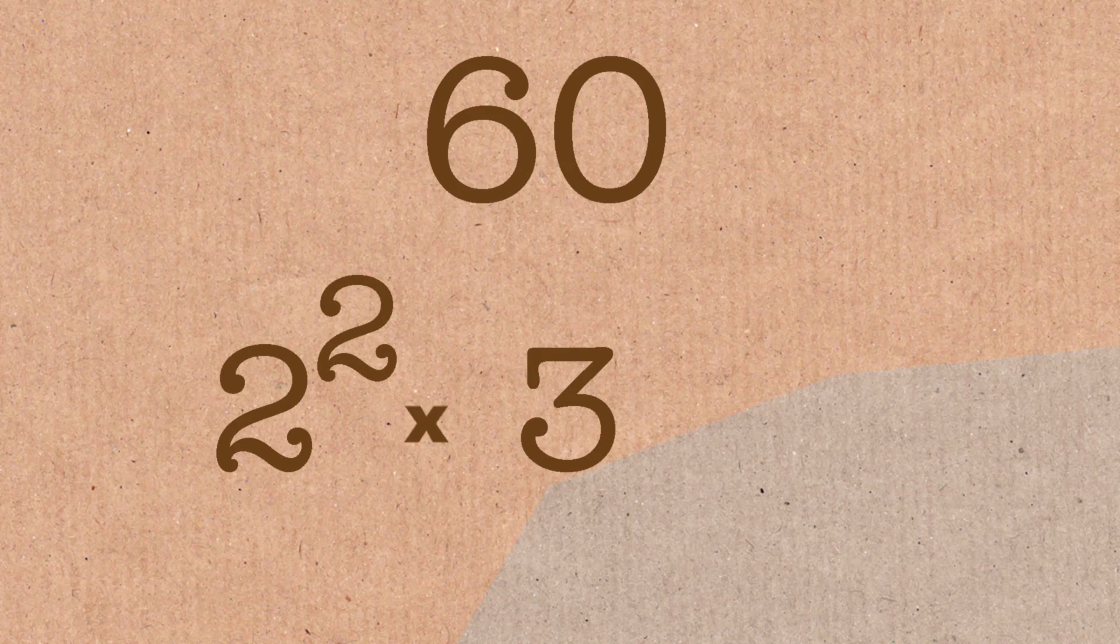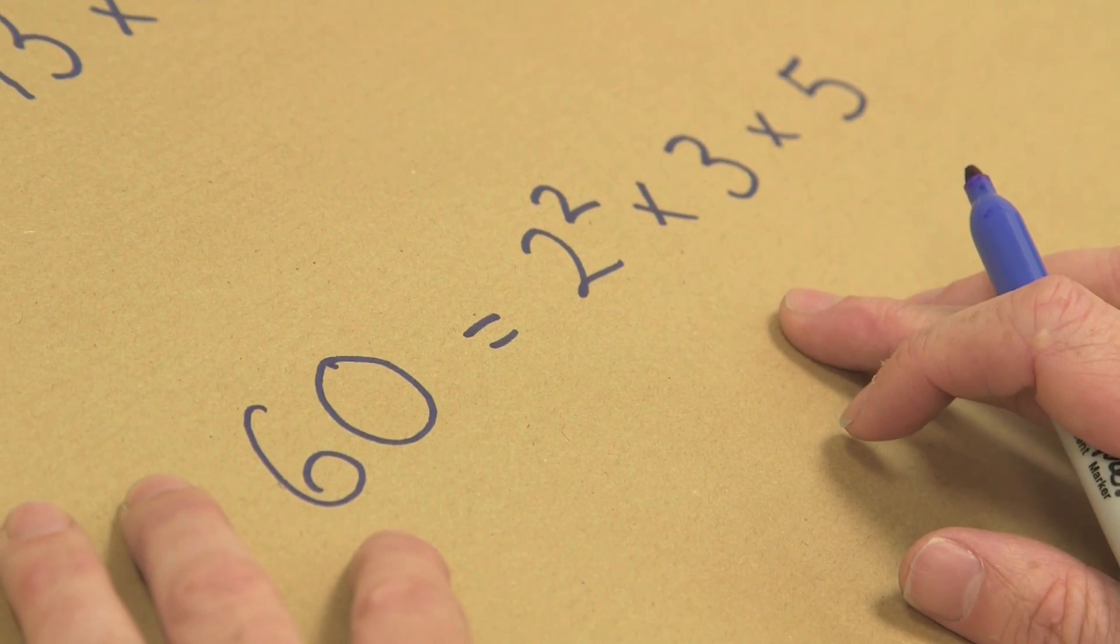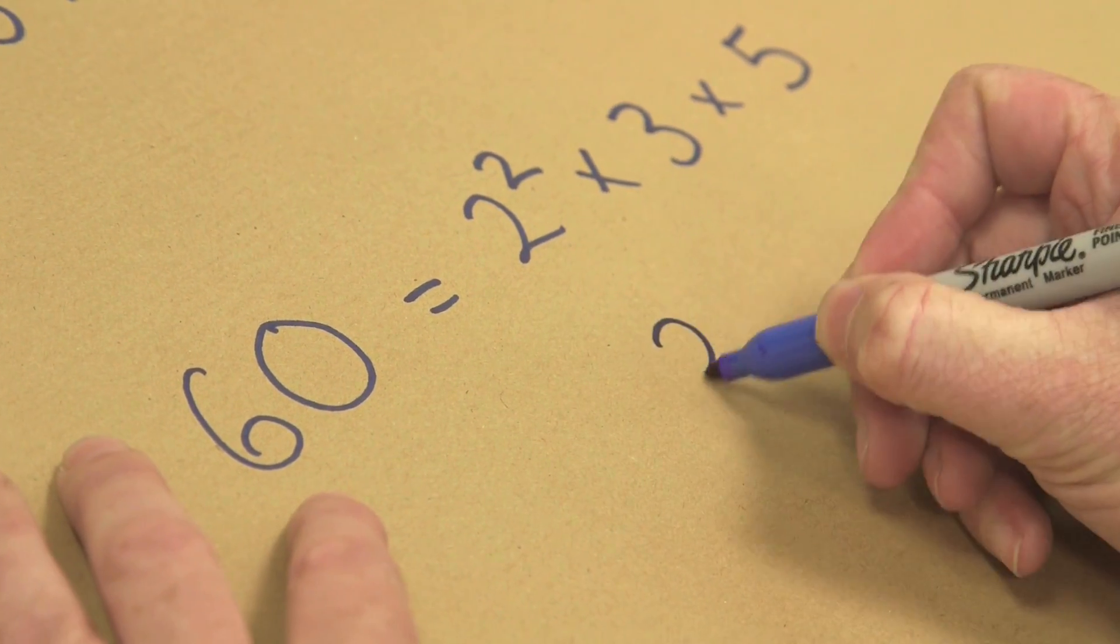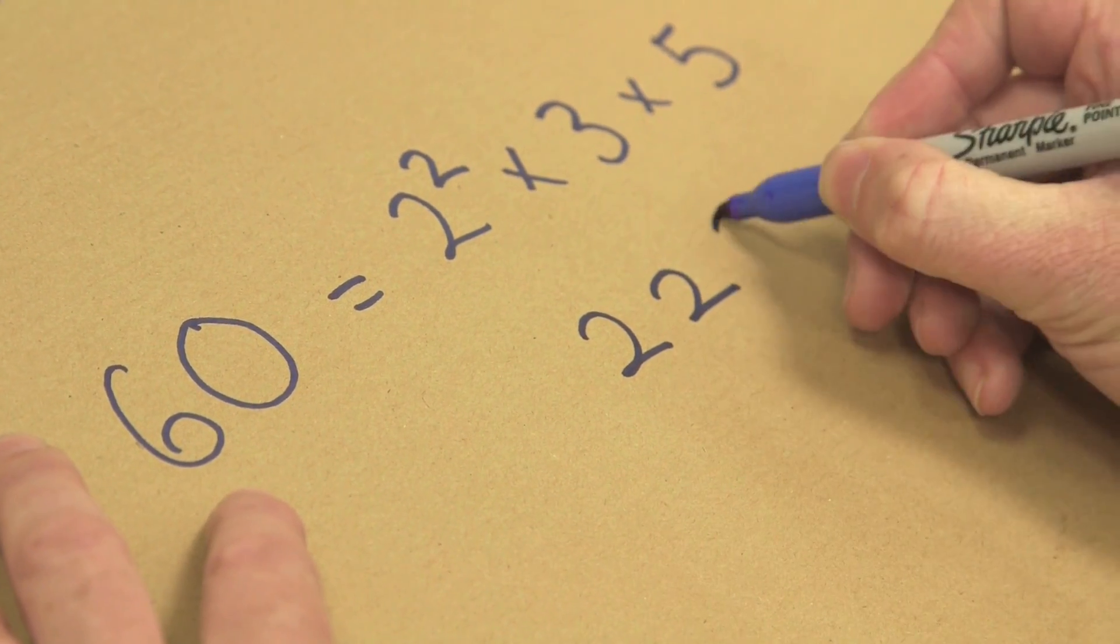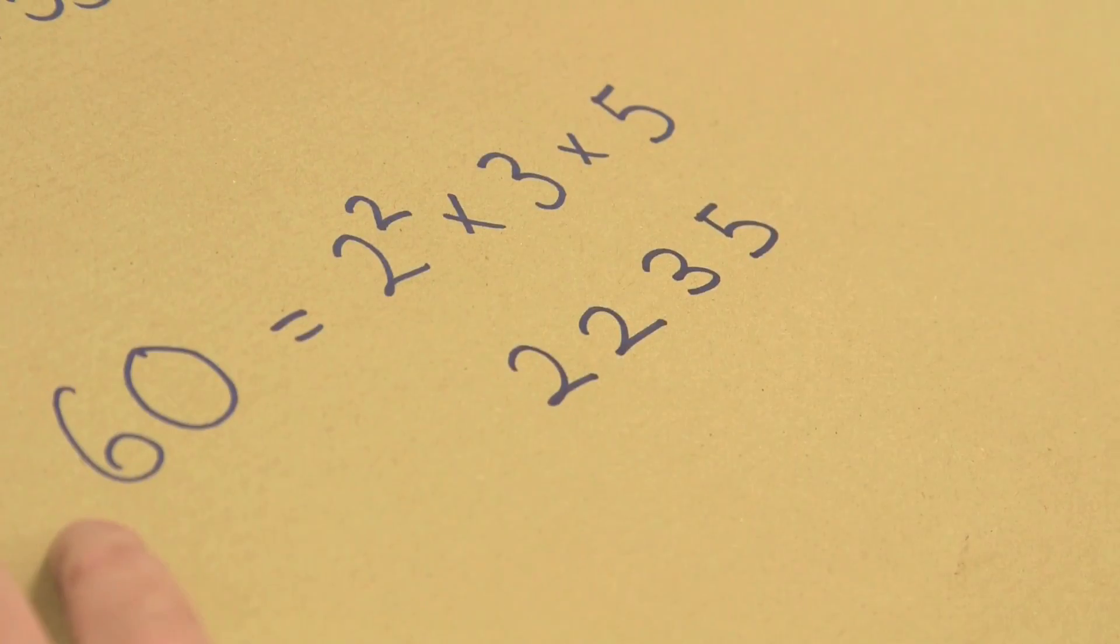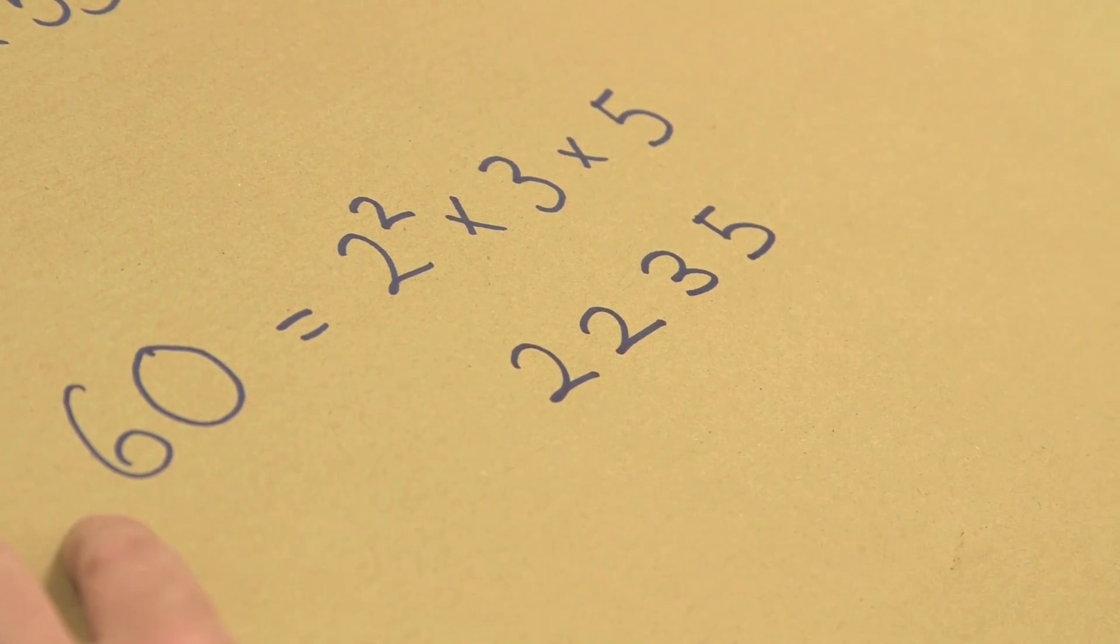Now what I do is, this is the iteration that John Conway suggested: all those powers, I bring them down. So I write this as 2, 2, 3, 5. So I now get the number 2235.